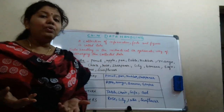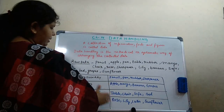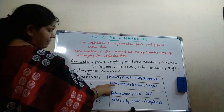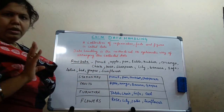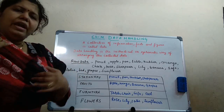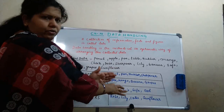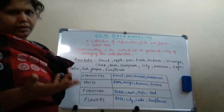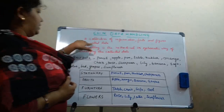Now what we will do? We will arrange them. So we have arranged now — you can see this table. Stationary items in one section, fruits in one section, furniture in one section, and plants in one section. If everything would have been kept together, think how difficult it is to find them. When we arrange it, you will go to that particular section and find your things easily. So the collection of information, facts and figures is called data.